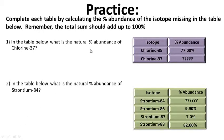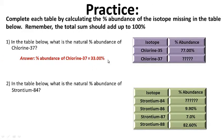Practice: complete each table by calculating the percent abundance of the isotope missing in the table below. Remember, the total sum should add up to 100%. Pause and work on these. When you're ready to see the answers, hit play. For the chlorine-37 isotope, the percent abundance is about 33%. For the strontium-84 isotope, the percent abundance is about 0.5%. Not too hard.